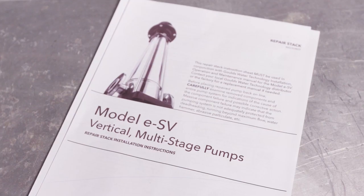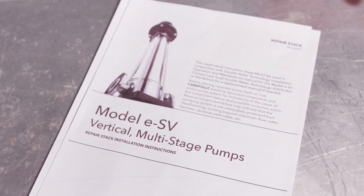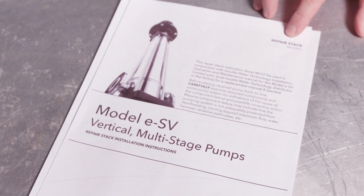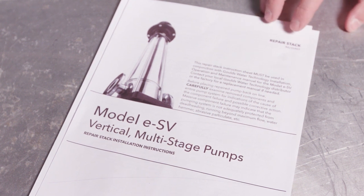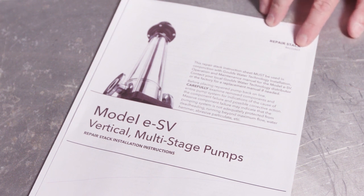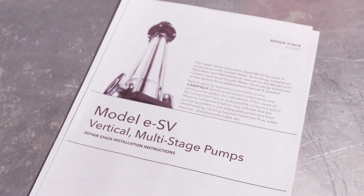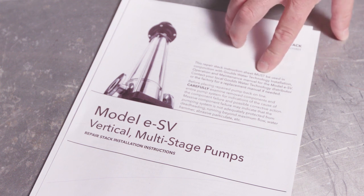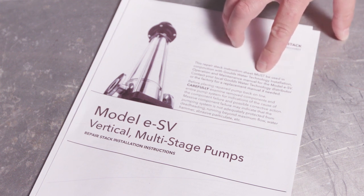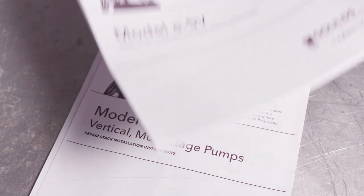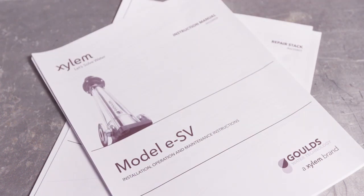The documentation for this repair stack installation starts with the repair stack installation manual, instruction manual IM-235, and the R after that has to do with revision. This happens to be revision 3. You may also need the regular installation manual for the ESV, and that is your IM-228.